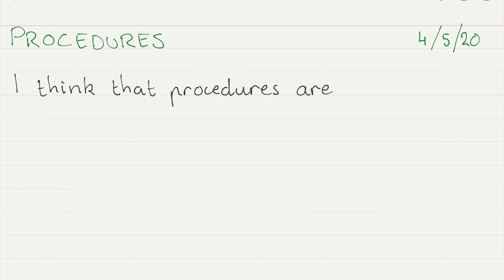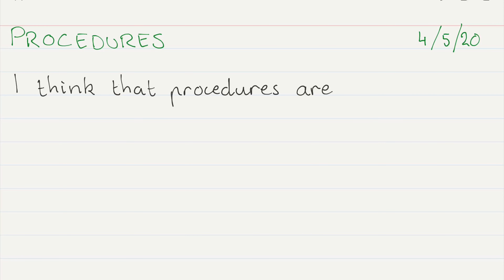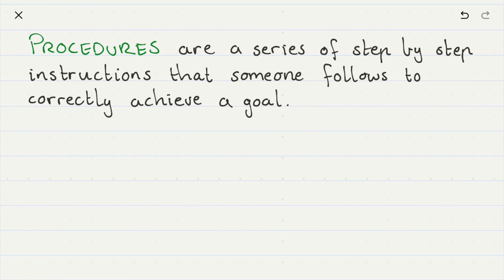How did you go? Well, if you wrote something along the lines of this, then you were correct. Procedures are a series of step-by-step instructions that someone follows to correctly achieve a goal. Now pause the video again and copy this down in your book underneath what you've already written — don't forget to leave a line.